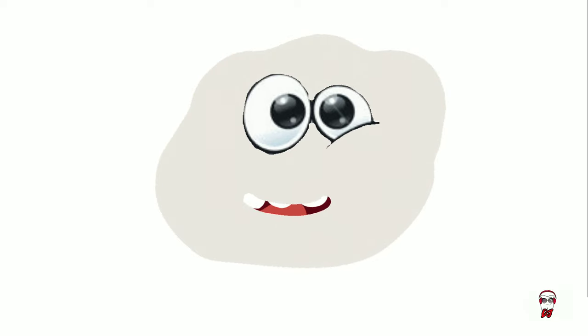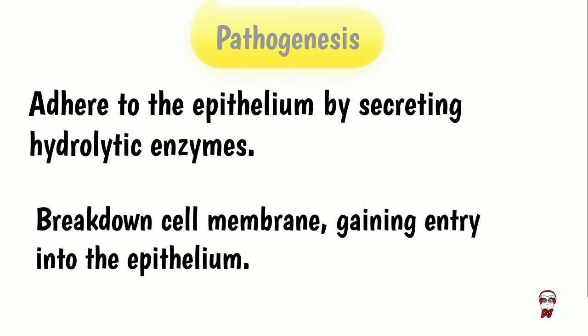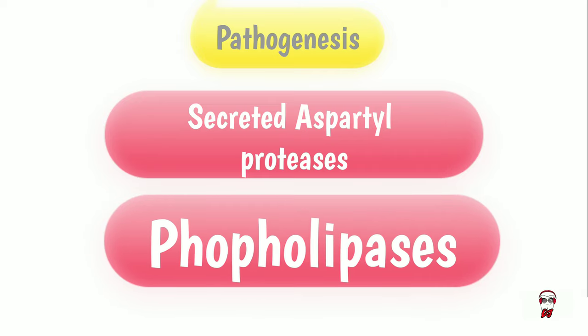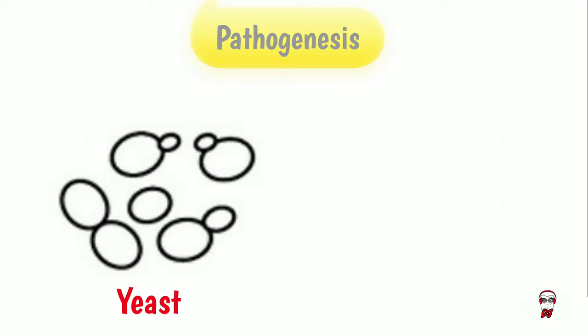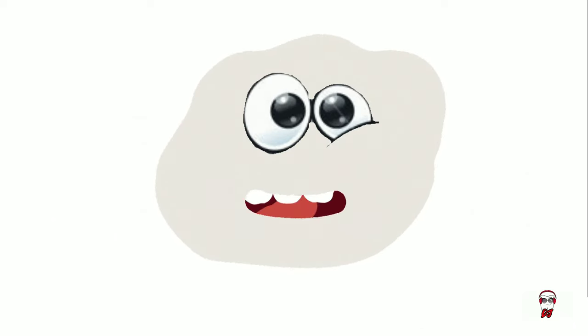So how exactly do I work? Want to know how I attack these patients? Let's take a look at my pathogenesis. In a suitable environment, I tend to adhere to the epithelium by secreting hydrolytic enzymes — secreted aspartyl proteases and phospholipases — which break down the cell membrane, helping me gain entry into the epithelium. Once I'm in the host's mucosa, I morph from yeast form to hyphal form, which helps me adhere and penetrate the epithelium better.